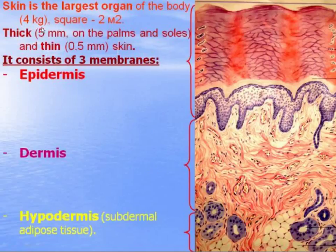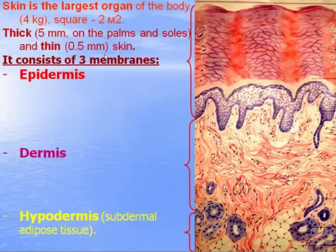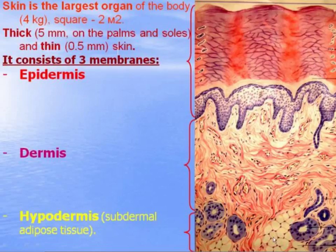Skin weighs about four kilograms and its surface area is more than two square meters. There is thick skin — five millimeters in thickness — on the palms and soles, and thin skin — about 0.5 millimeters — covering other parts of the body. Skin is a tubular organ consisting of three membranes: epidermis (outer), dermis (middle), and hypodermis or subdermal adipose tissue.